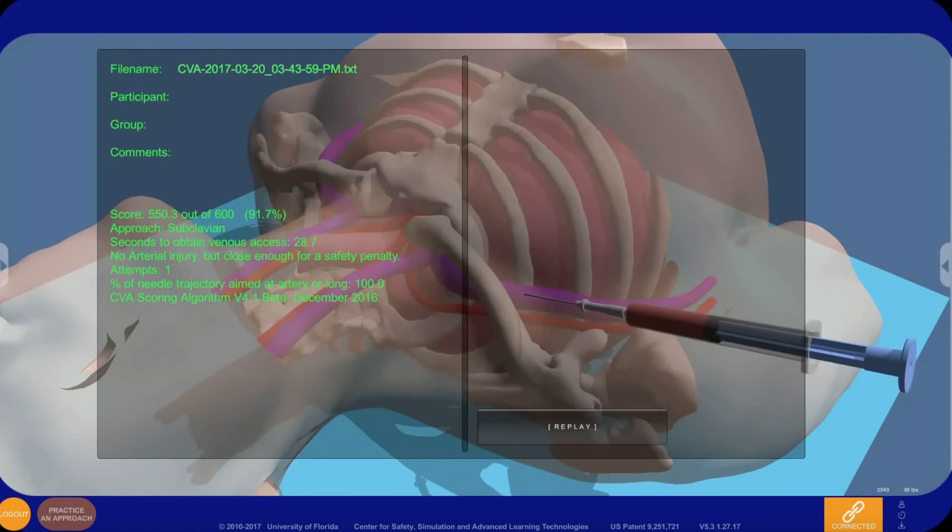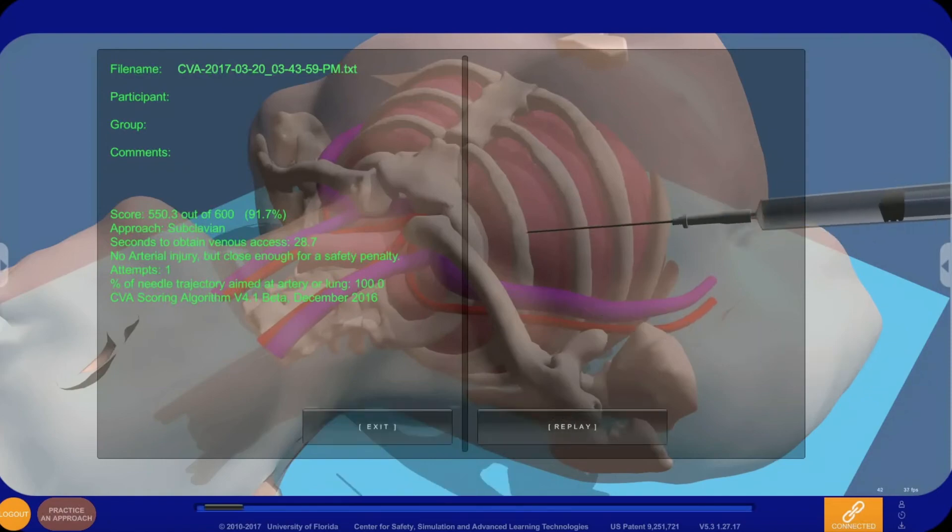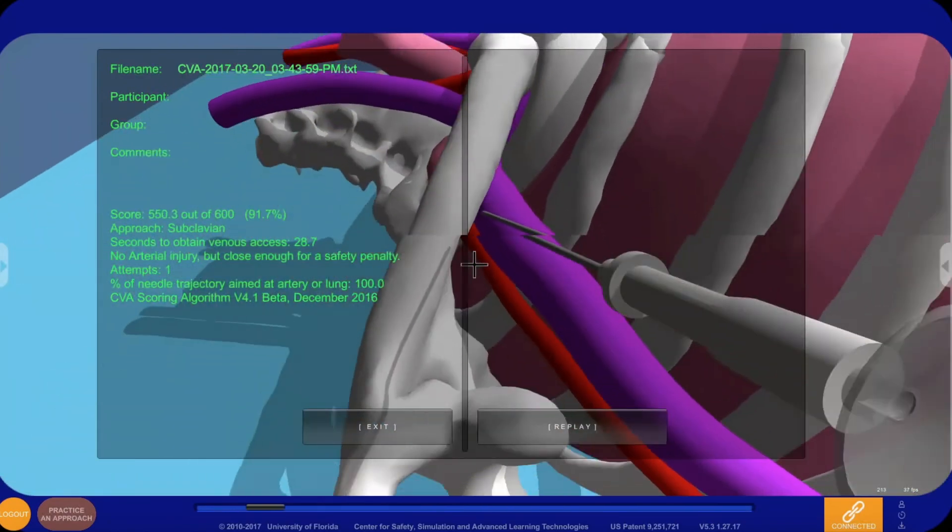Scores are based on time, anatomical structures punctured, ultrasound technique, and proximity to no-go areas.